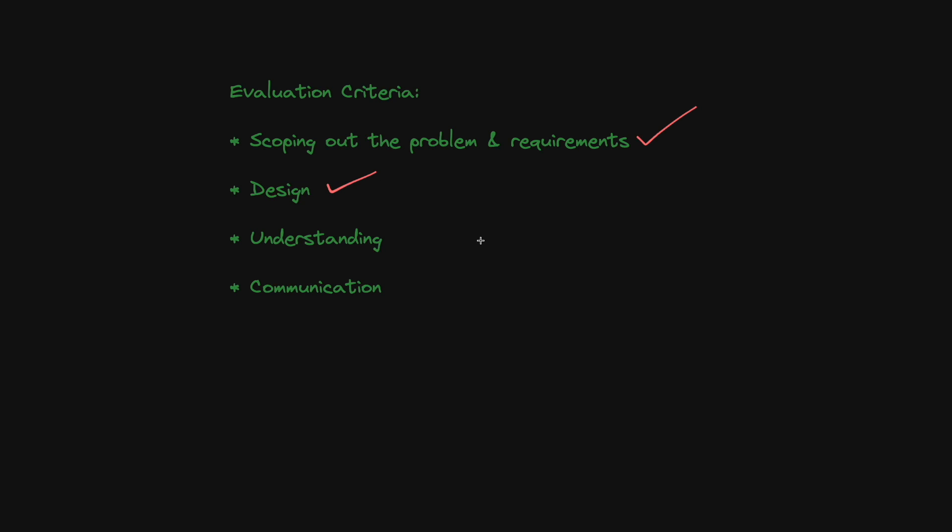The next evaluation pillar is understanding. How well do you actually know what you're talking about? Can you deep dive into certain topics? Can you discuss trade-offs or technologies from first-hand experience, or is all of your knowledge from a resource like Grokking or a YouTube video? Do you know and understand the challenging parts of designing a system like this? The last pillar is communication. Can you clearly, concisely, and confidently present your design and justify your decisions? Can you articulate what you're doing, what decisions you're making, and trade-offs being taken in a way that conveys mastery of the subject? Do you listen to and incorporate feedback from the interviewer, or do you just do whatever you want?